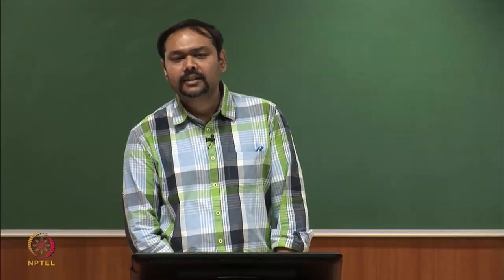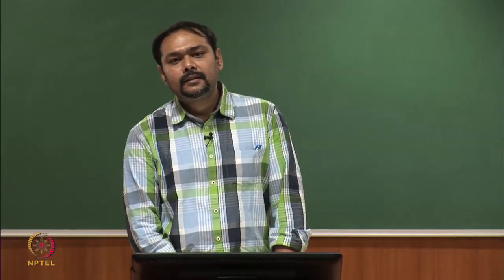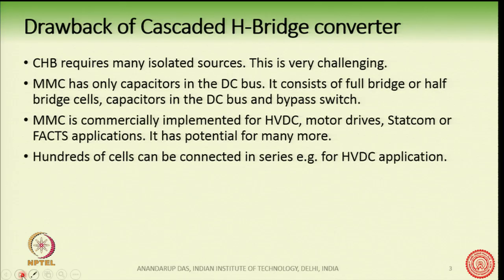MMC has only capacitors in the DC bus. The cell structure consists of either half-bridge or full-bridge. Like the CHB, it also has a bypass switch — if one cell is faulty, it is possible to bypass it and still run the converter without shutting it down. The fault-tolerant feature is also present in MMC. It is commercially implemented for HVDC, motor drives, STATCOM, and other FACTS applications.